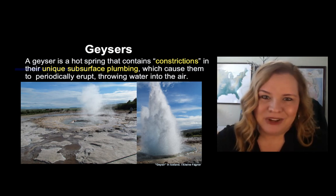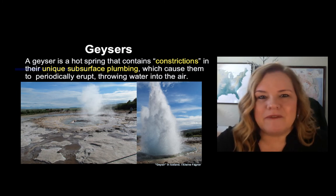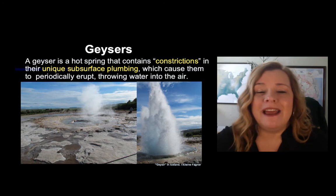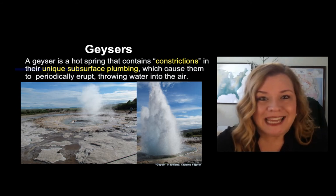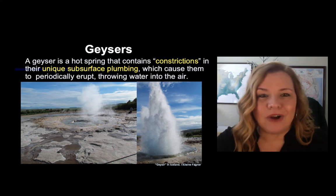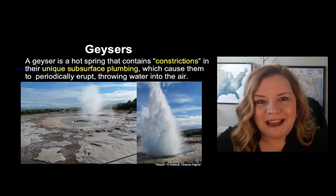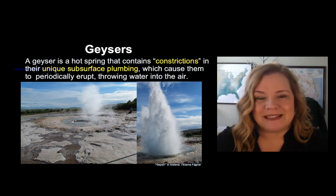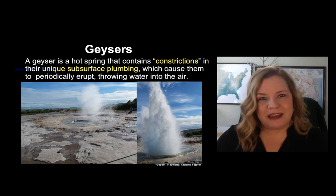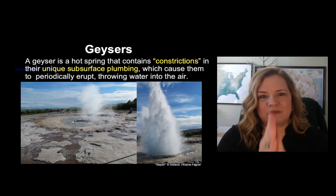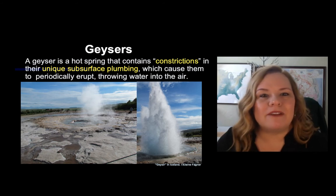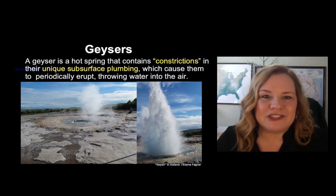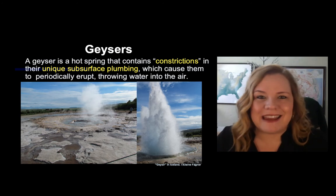Primarily, we find these constrictions from high silica deposits called geyserite, also known as sinter — S-I-N-T-E-R. Geyserite is simply high silica deposits that are precipitated out during eruptions, causing the buildup of silica that constricts the inside of the plumbing.